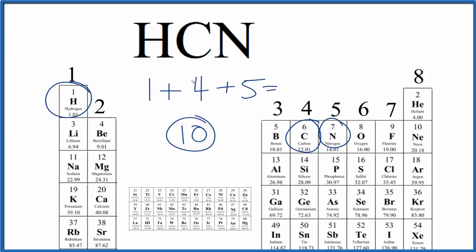This is Dr. B, finding the number of valence electrons for HCN, hydrogen cyanide. There are 10. Thanks for watching.